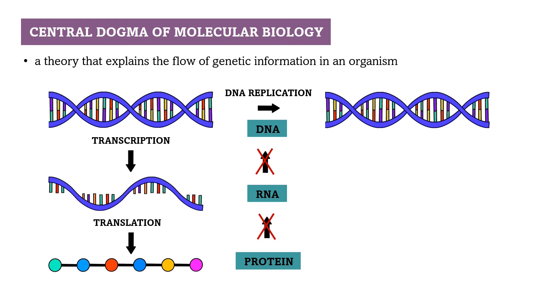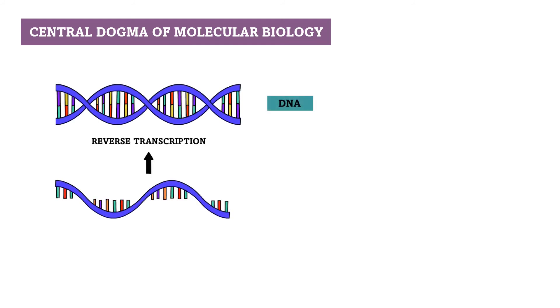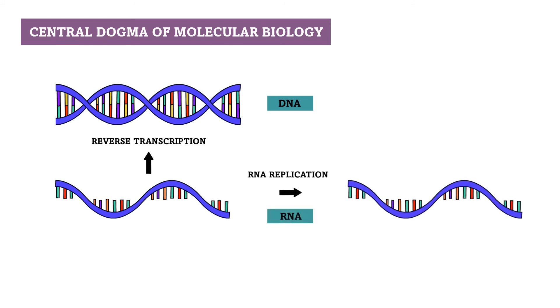However, it was discovered that genetic information can be passed in other ways. In retroviruses, it is possible to transfer information from RNA to DNA — this is called reverse transcription. What is more, some RNA viruses replicate their RNA, which is called RNA replication.